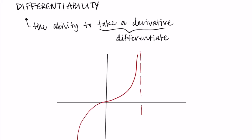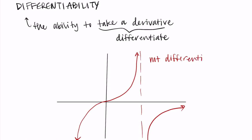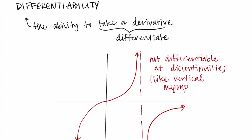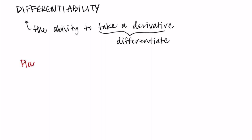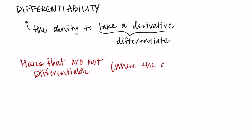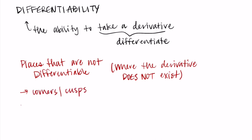As we mentioned before, when the function isn't continuous — at places where it is discontinuous — you also cannot take the derivative. A function must be continuous in order to take the derivative there. So functions are not differentiable at discontinuities, and this can be any of the discontinuities we talked about: vertical asymptotes, holes, or outside the domain of the function. To summarize, the places that are not differentiable are: a corner or cusp, an endpoint, or a discontinuity.